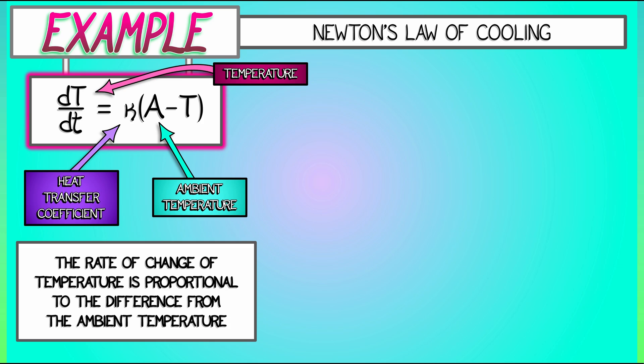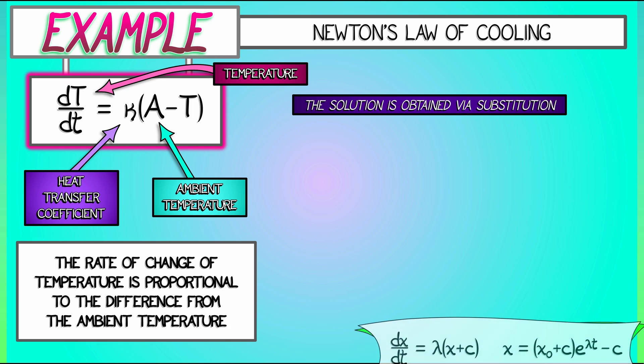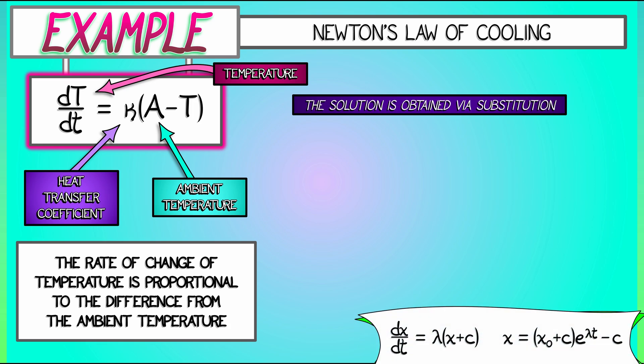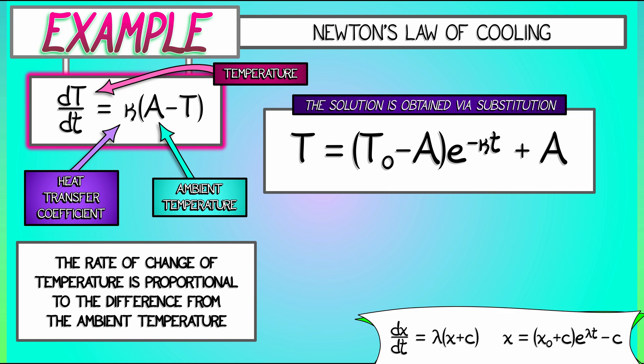Meaning that we can pull up our previous solution. We can match up what's the lambda, what's the c, and write out a general solution for temperature T as quantity T_0 minus A, that is the difference between the initial and ambient temperature, times e to the minus kappa t plus capital A.